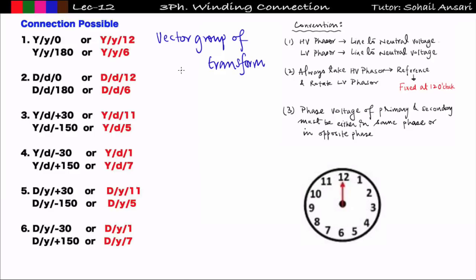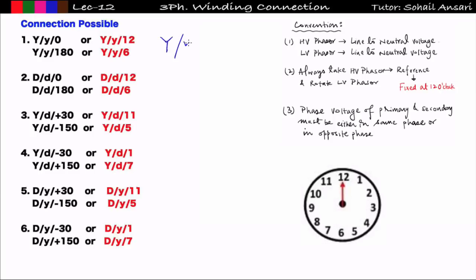The clock representation or the degree value (zero, 180) represents the vector group of the transformer. The vector group denotes by how much angle the line-to-neutral voltage of the LV side leads or lags the line-to-neutral voltage of the HV side. For YY0 (also written YY12), the phase shift between LV and HV line-to-neutral voltages is zero degrees.